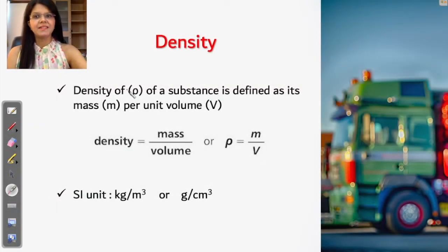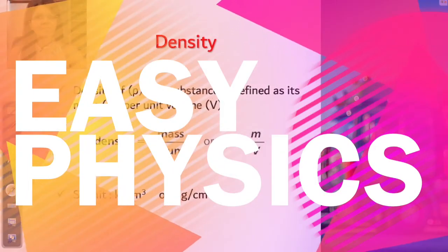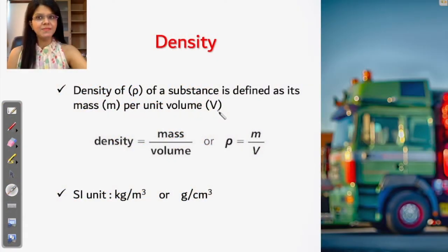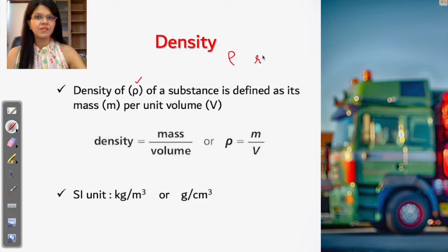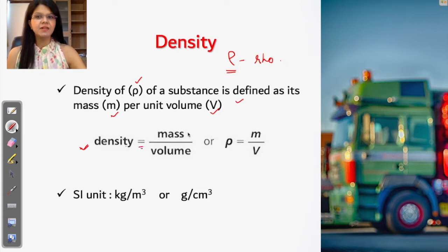Let us understand density. The density of a substance is defined as its mass per unit volume. Density is denoted by the Greek letter rho (ρ). If we write this statement in terms of mathematics, density is equal to mass over volume. In terms of its symbol, density rho is mass over volume.